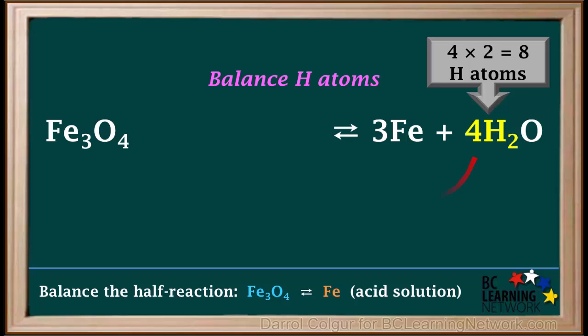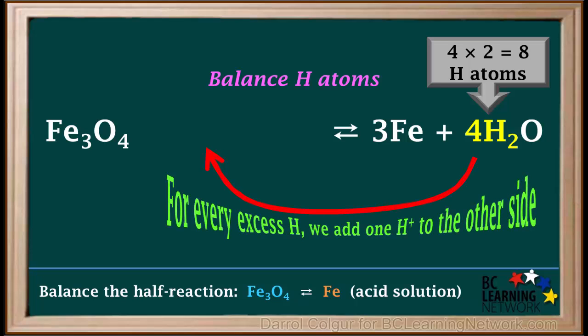The rule for balancing hydrogen atoms is, for every excess H on one side, we add one H plus to the other side. So, we add 8H plus to the left side. Now, we have 8Hs on both sides.